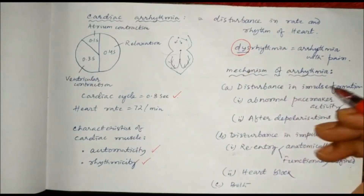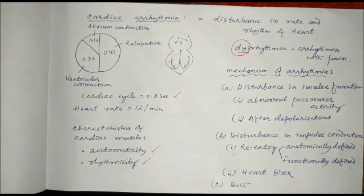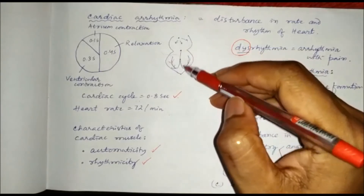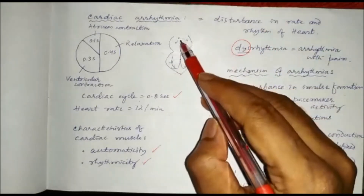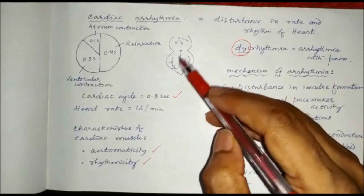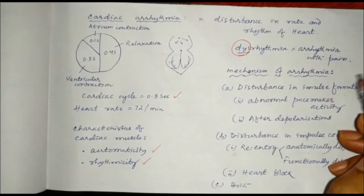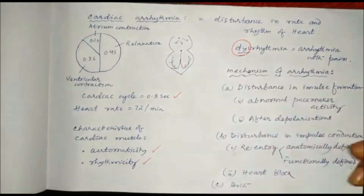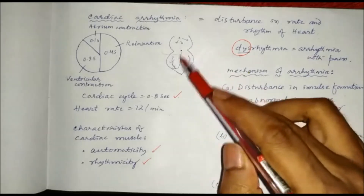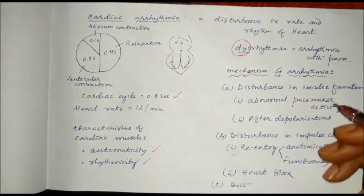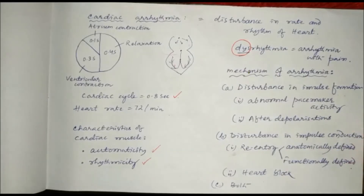Now we will discuss the mechanism of arrhythmia — how this arrhythmia occurs. For this rhythm, the conduction system of the heart has first impulse generation, then impulse conduction. So if there is disturbance in impulse formation, that will lead to arrhythmia. If there is disturbance in impulse conduction, then that will also lead to arrhythmia. And there may also be both disturbances in impulse formation as well as impulse conduction.